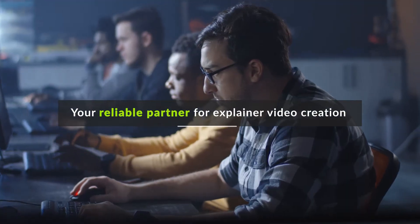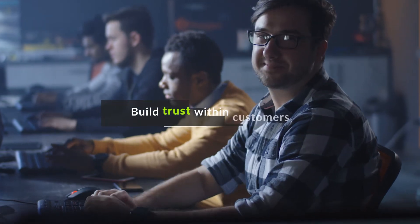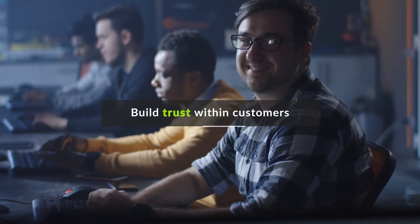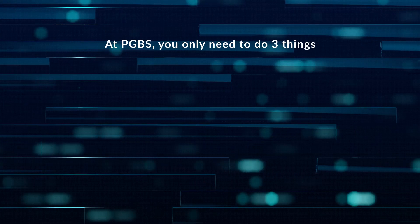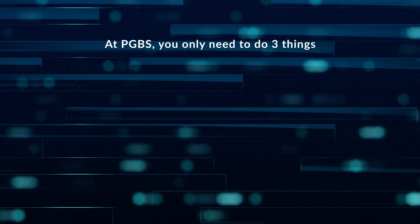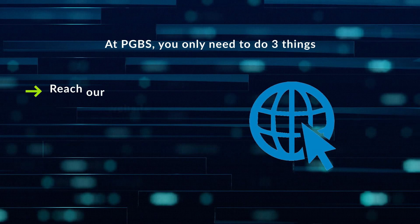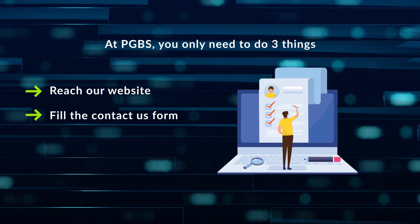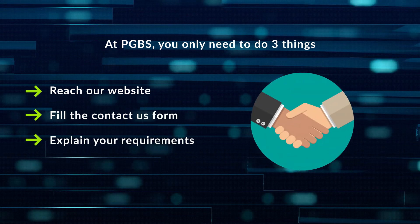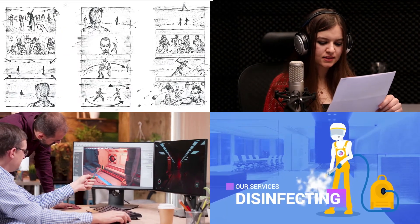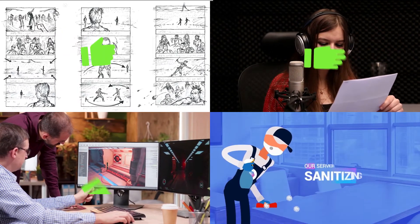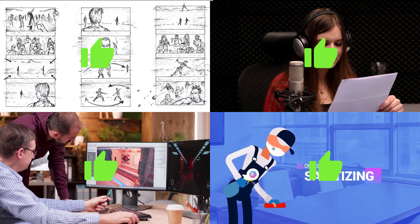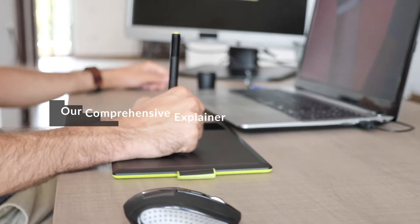Your reliable partner for explainer video creation that can convey your messages and build trust within customers. At PGBS, you only need to do three things: reach our website, fill the contact us form, and explain your requirements. We can handle the rest, starting from storyboarding to animation — of course, everything will be done with your approval.